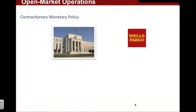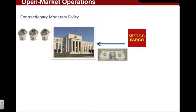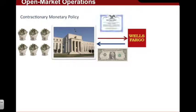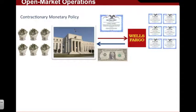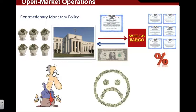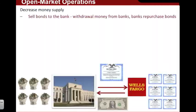Now let's look at contractionary monetary policy — it works the exact opposite. With contractionary monetary policy, the Federal Reserve is taking money from the banks. The banks now hold securities instead of money. The Fed sends securities back to the banks, and in turn this raises interest rates. As the Federal Reserve engages in contractionary monetary policy, this leaves the bank with less liquidity, causing interest rates to rise. Higher interest rates encourage more saving and less borrowing, thus slowing the economy. To decrease the money supply, they sell bonds to the banks, and the Federal Reserve withdraws money from the banks.